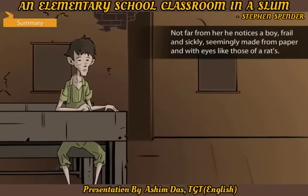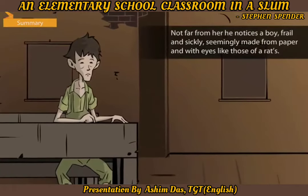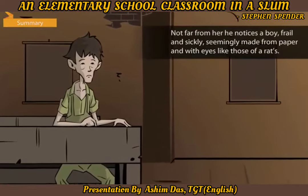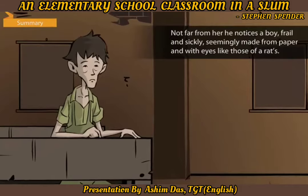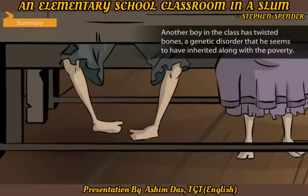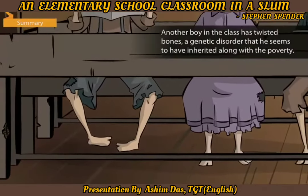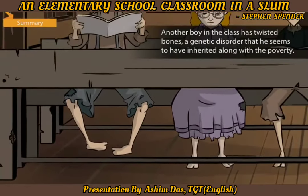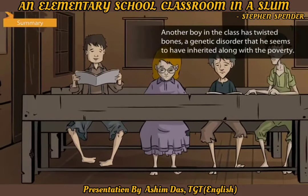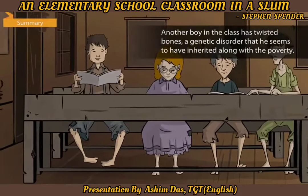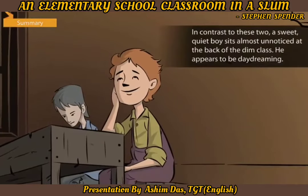Not far from her he notices a boy, frail and sickly, seemingly made from paper and with eyes like those of a rat's. Another boy in the class has twisted bones, a genetic disorder that he seems to have inherited along with the poverty.